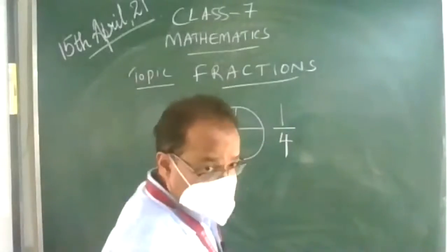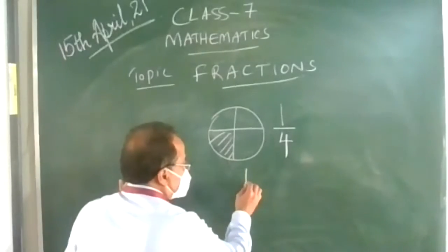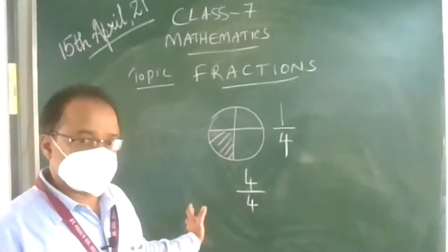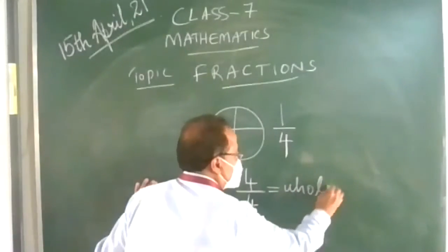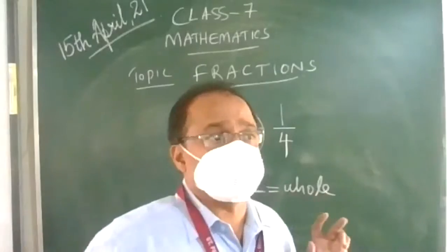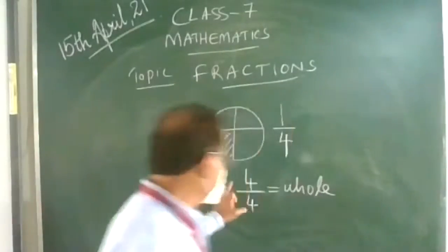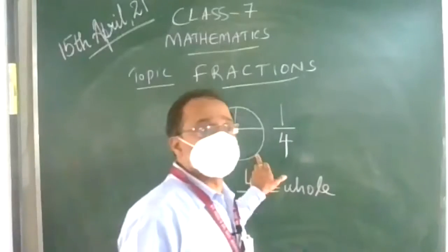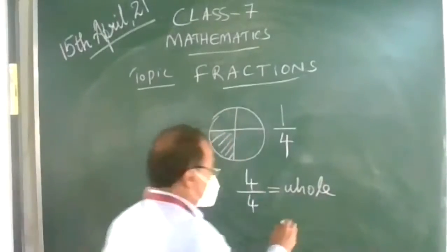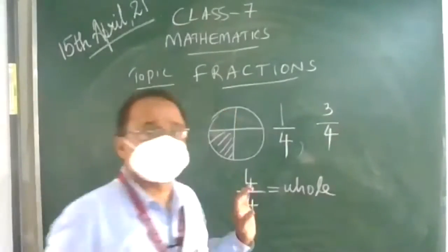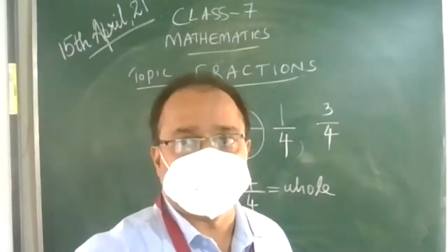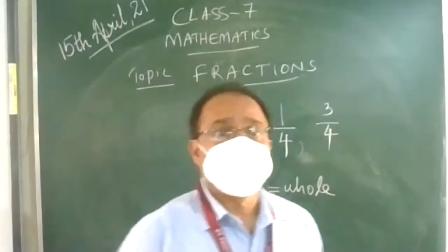The whole circle is 4 upon 4 — it is divided into 4 parts, and 4 upon 4 is the complete whole. Now, if I want to express only the shaded portion, there comes the need of fractions: 1 upon 4. There are 4 equal parts, and one part is shaded. Similarly, if I want to express the unshaded part, that is 3 upon 4 — situations like this give rise to the need of fractions.